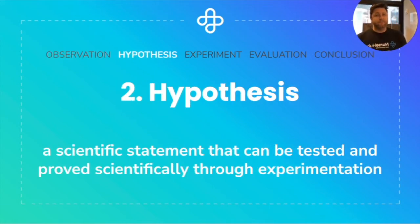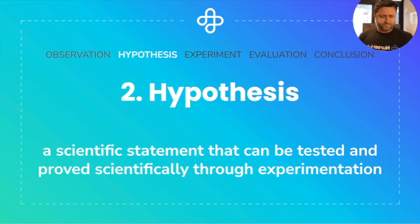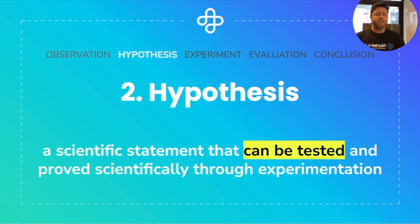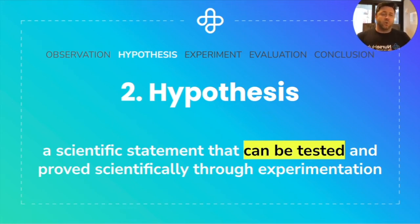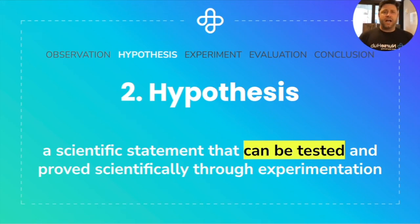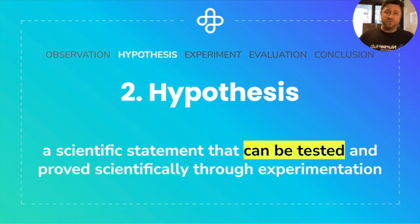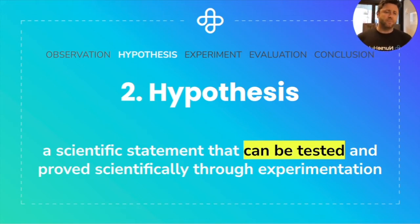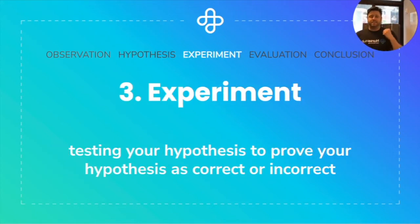The second step is making a hypothesis. A hypothesis is a scientific statement that can be tested and proved scientifically through experimentation. The key here is that it can be tested — it's an educated guess which can go through an experimental process to determine whether or not your hypothesis is correct or incorrect. When my phone wasn't charging, I formed the hypothesis that maybe the charger was broken. I was hoping it wasn't my phone since the charger is less expensive. So my educated guess was that the charger is broken and that's why my phone isn't charging.